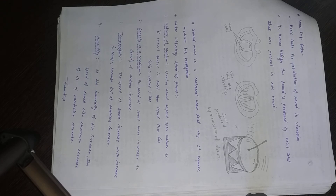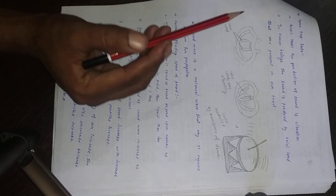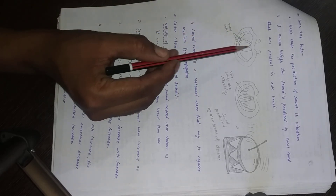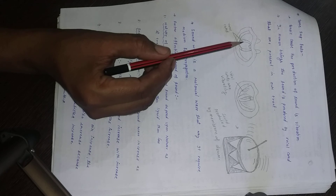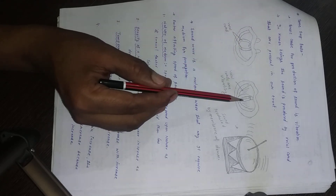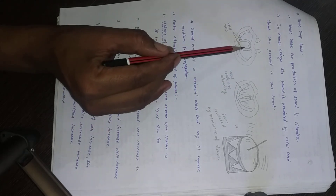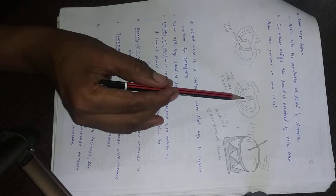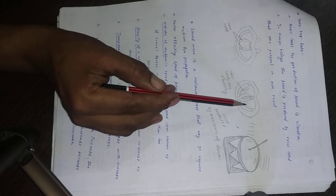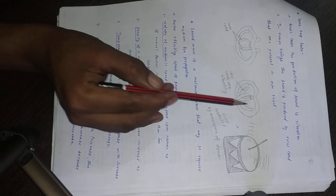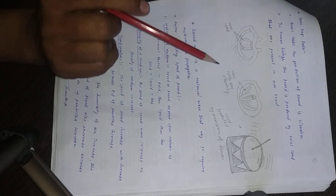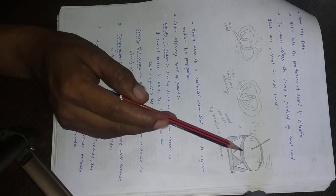Sound is produced by vibratory motion, as we read in class 8. In human beings, vocal cords present in the throat — which are slits — vibrate as air passes through them, producing sound. Similarly, when you hit a drum, the membrane undergoes vibratory motion and produces a sound wave.